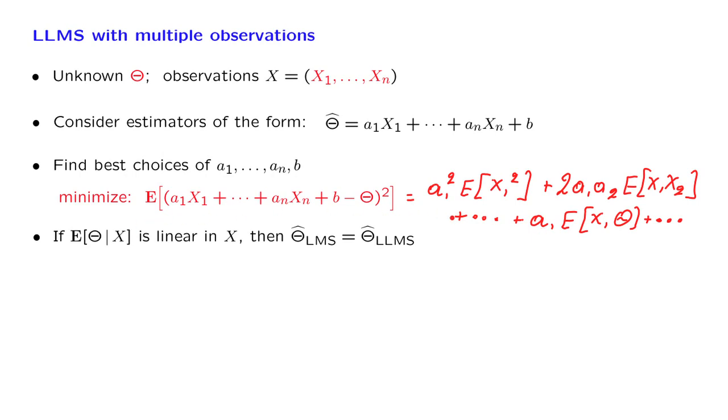To minimize this expression, we're going to take the derivative of this and set it equal to 0. When you take the derivative of a function that involves only quadratic and linear terms, you get something that's linear in the coefficients. The conclusion is that when you actually carry out this minimization by setting derivatives to 0, what you will end up doing is solving a system of linear equations in the coefficients that you're trying to determine.